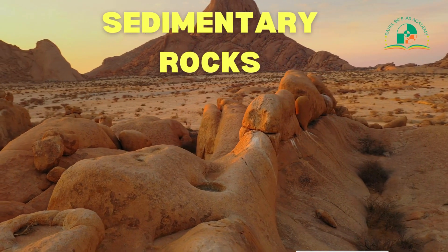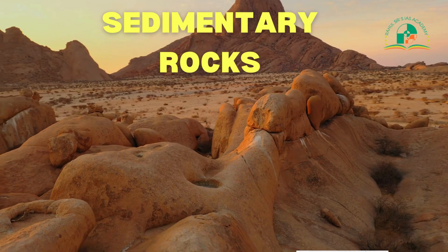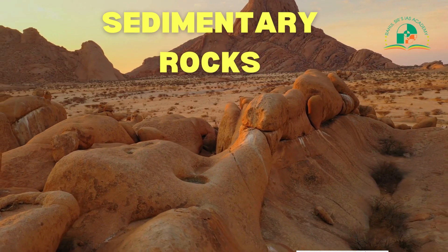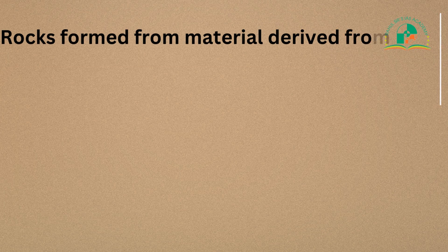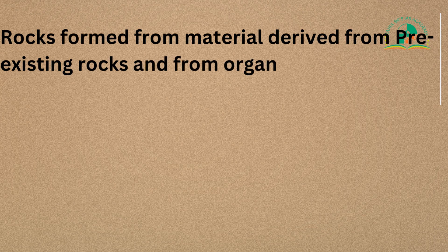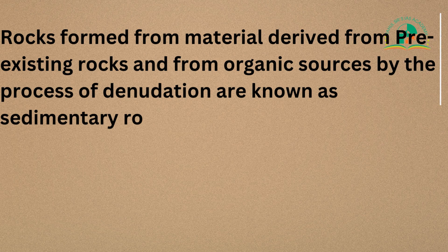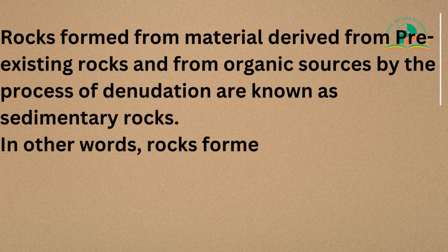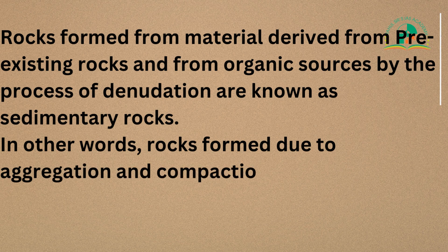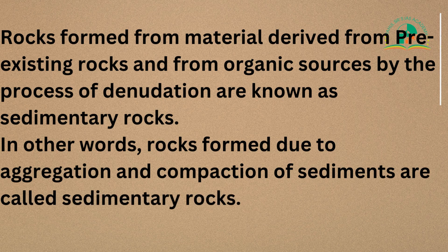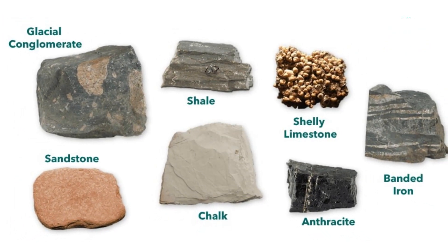The second type of rocks is sedimentary rocks. The rocks formed from material derived from pre-existing rocks and from organic sources by the processes of denudation are called sedimentary rocks. Examples of sedimentary rocks include shale, limestone, chalk, coal, and sandstone.